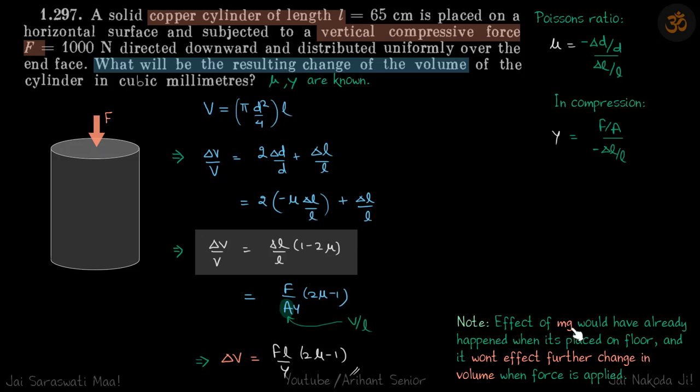There is a note here about the effect of Mg. The force on top is placed on a cylinder which is already kept on the table. Whatever the effect of Mg is would have already happened when it's placed on the floor, and it won't affect further change in volume when the force is applied on top.